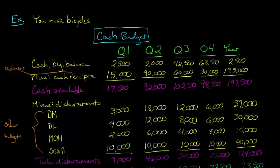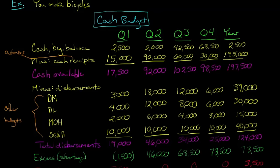We can compare our disbursements of $19,000 against the cash we had available — $17,500. The disbursements are more than the cash available, which means we're going to have a shortage of cash, or a deficiency of cash. I've got this line item called 'excess or shortage,' and the shortage is in parentheses, which means it's negative — that's the convention instead of putting a negative sign. Cash available minus disbursements gives us negative $1,500, or $1,500 in parentheses. That means we are going to be $1,500 short this quarter.